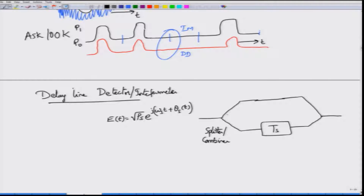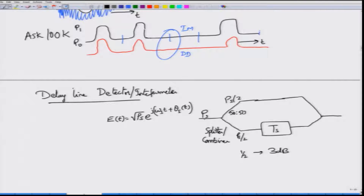In this case we are splitting equally — this is power splitting — so we call this a 50-50 coupler. If you start with power Ps, the power in each arm is Ps/2. This half corresponds to 3 dB. So the power-to-power ratio from input to each output arm is one-half, which corresponds to a loss of 3 dB. This device is therefore called a 3 dB coupler, a splitter, a combiner, a 50-50 coupler, or equivalently a 3 dB coupler. Similarly on the other side I have a combiner which combines in the same ratio.